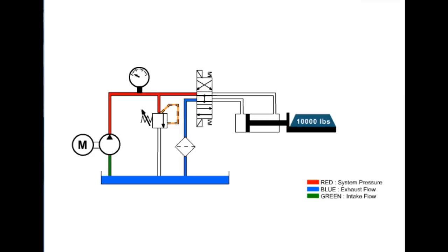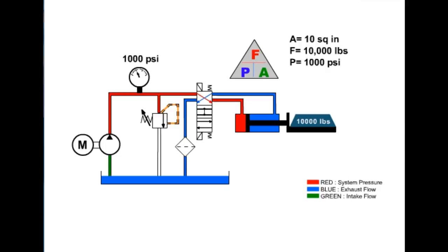Load-induced pressure is defined as pressure generated from the load or force on the actuator. The effective area of the cylinder piston is the area available for force generation. In our illustration, a 10,000-pound force gives us a load-induced pressure of 1,000 psi based on our formula. When the cylinder is extended, the required pressure to move the 10,000-pound load is 1,000 psi, less frictional forces.